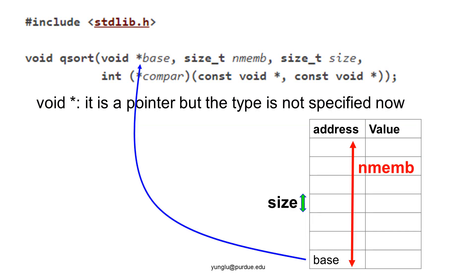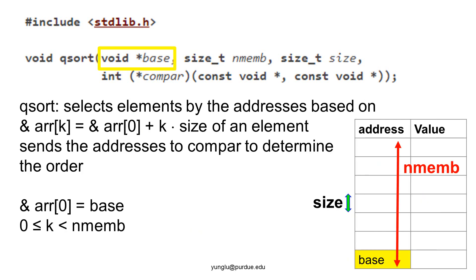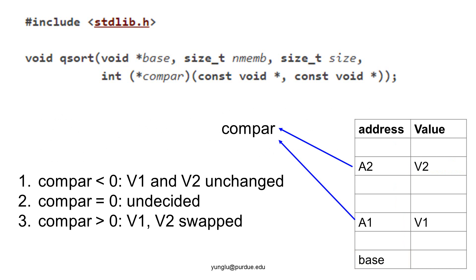This slide explains the meanings of the first three arguments. The qsort function sorts an array. The first argument is the address of the first element, the second is the number of elements, and the third is the size of each element. The qsort function selects array elements by their addresses using the rule: address of element k equals address of element 0 plus k times the size of each element, where k is between 0 and the number of elements. qsort takes the addresses of two elements, passes them to the compare function, and based on the result may swap the values stored at those two addresses.